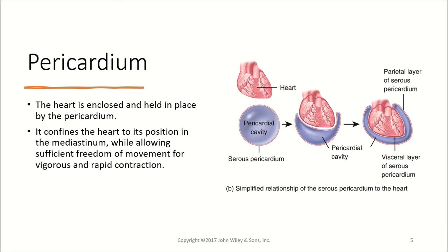The first structure associated with the heart that we'll discuss is called the pericardium. This is basically a sac that encloses the heart and keeps it held in place. The pericardium confines the heart to its position in the mediastinum, while allowing it sufficient freedom to move for the vigorous and rapid contractions needed to pump blood. The pericardium is a serous membrane.